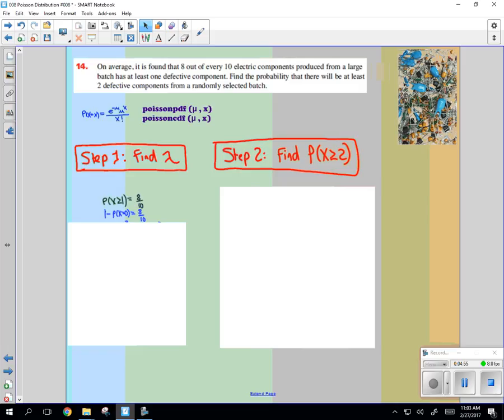We can find the probability of 0. If we go 1 minus probability of 0 is 8 tenths. What's the probability of none of them having it? 2 tenths. Yeah. 1 minus 8 tenths equals probability of 0.